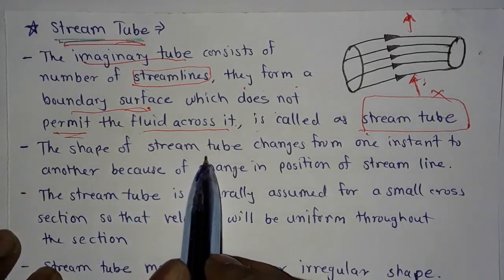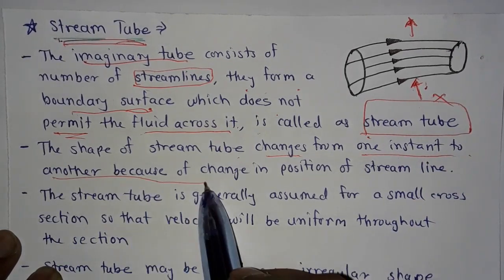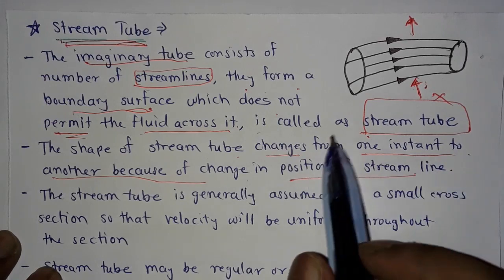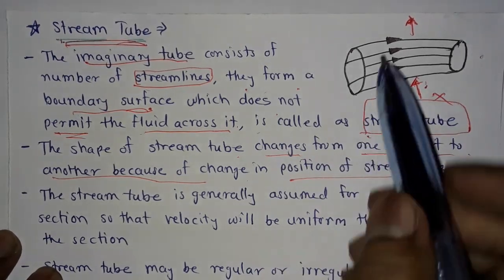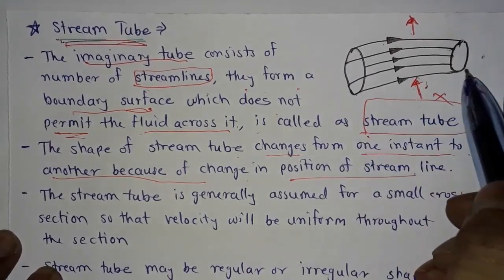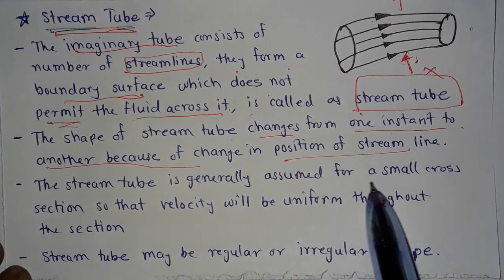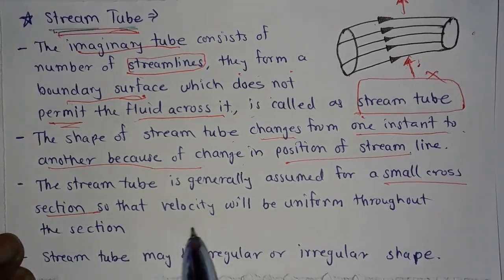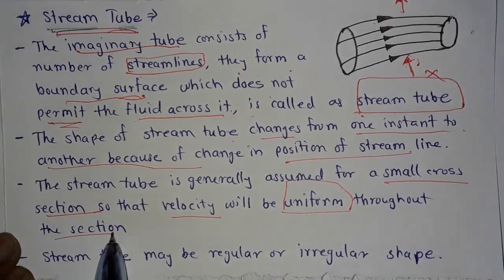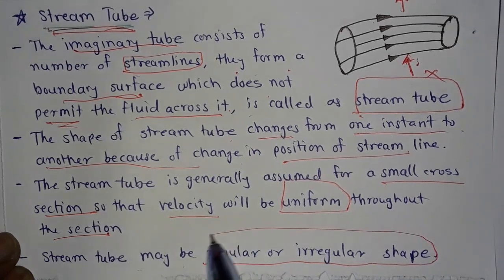The shape of the stream tube changes from one instant to another because of changes in the position of streamlines. In figures, the stream tube is generally assumed to have a small cross section so that velocity is uniform throughout the section. Stream tube may be regular or irregular in shape.